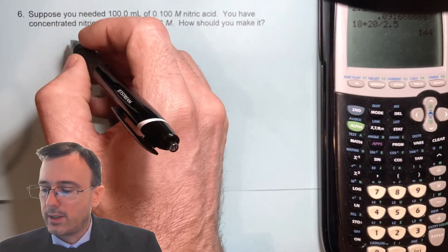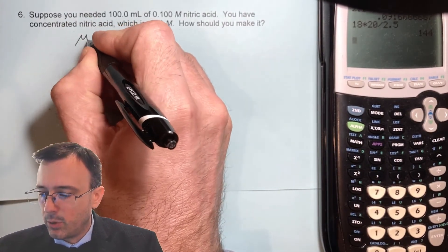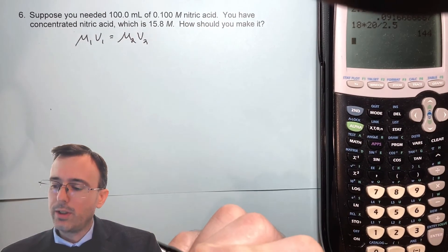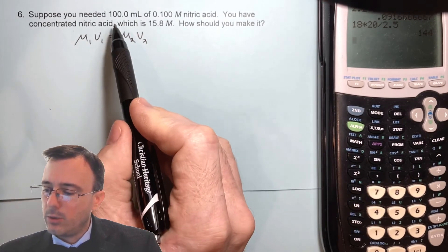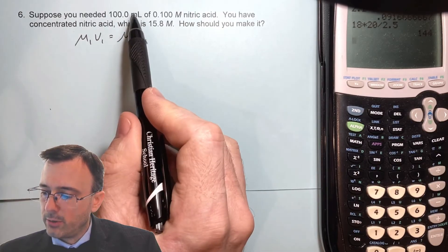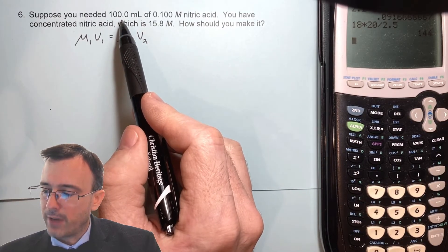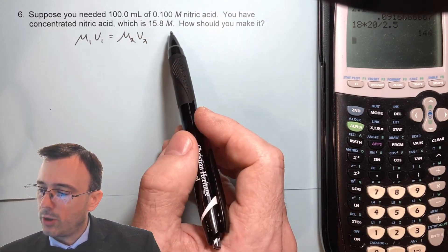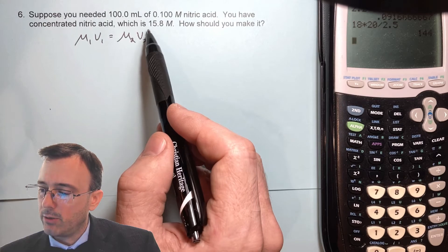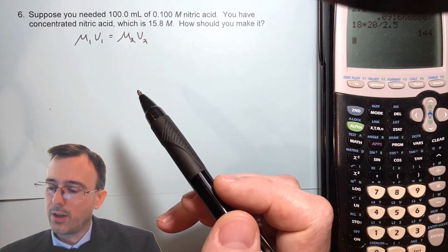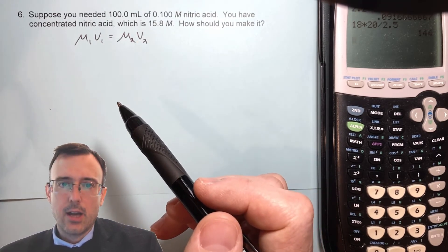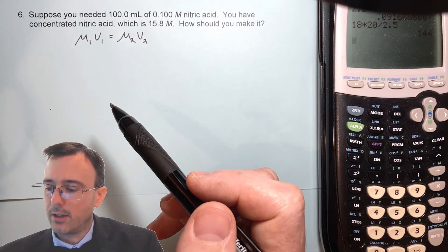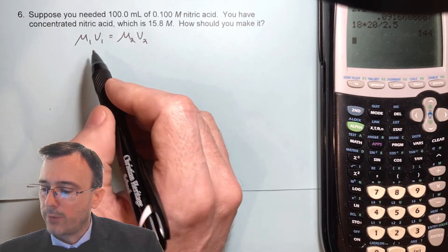Let's start with the dilution equation: M1V1 equals M2V2. We know the final volume of 100 milliliters, we know our final molarity, and we know our initial molarity — but we don't know our initial volume. So we're going to solve for V1 by dividing both sides by M1. There's going to be a little bit of a twist to this problem.